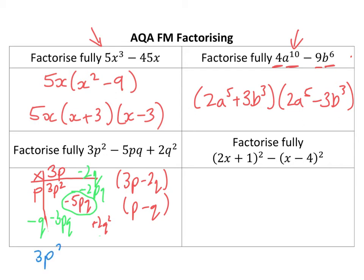So it could be, I'll try and do this in a different color, you get 3p squared minus 3pq minus another 2pq plus 2q squared. You can do that and then factorize and you end up with the same answer, different ways of doing it.